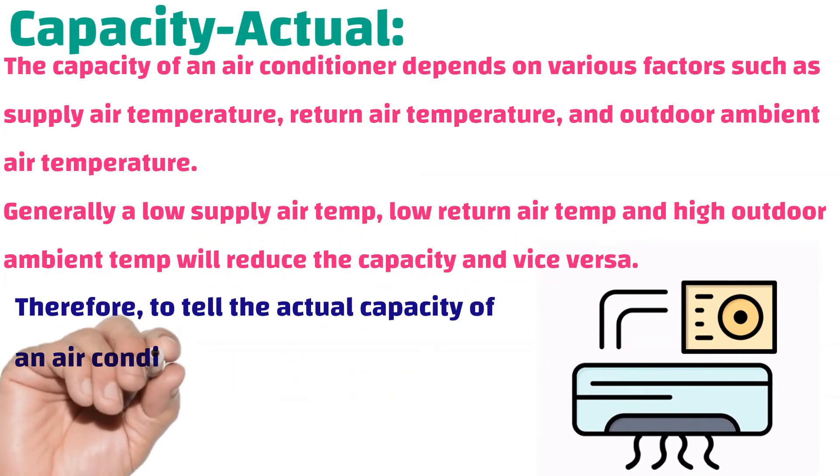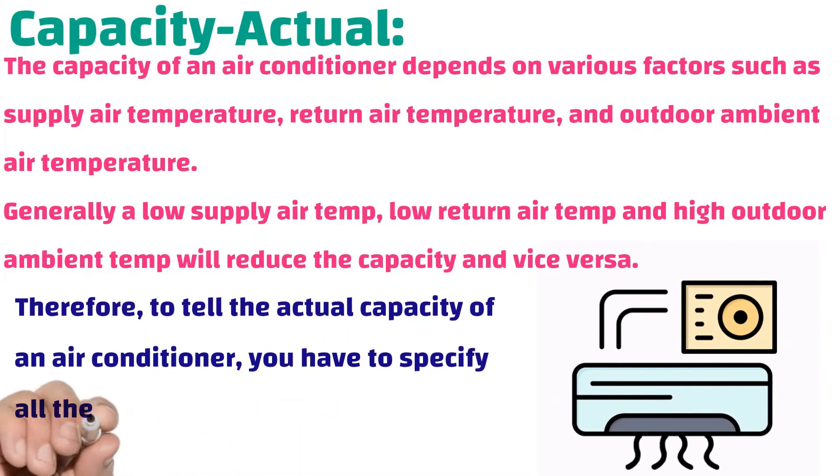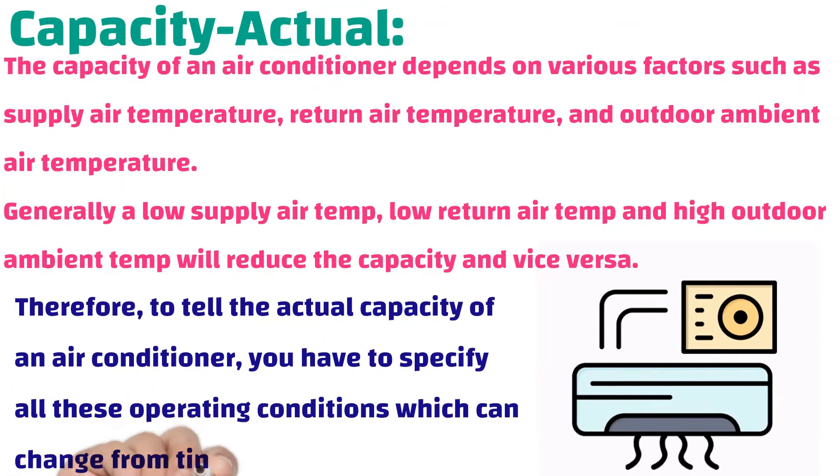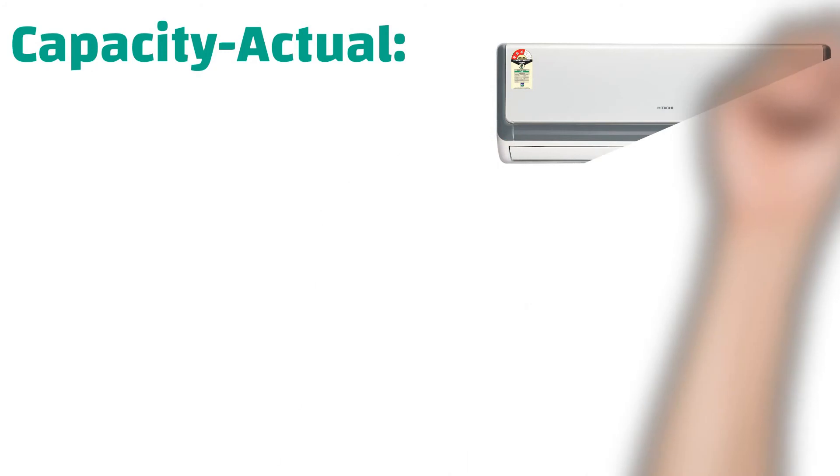Therefore, to tell the actual capacity of an air conditioner, you have to specify all these operating conditions which can change from time to time. The actual capacity can vary substantially under different conditions.